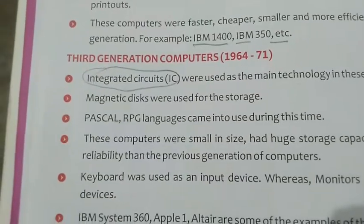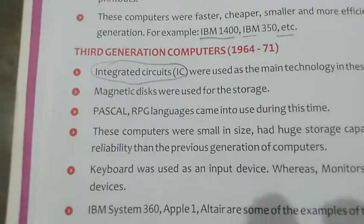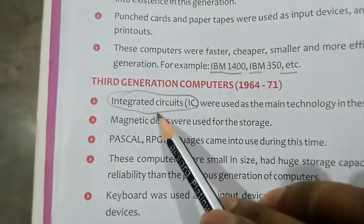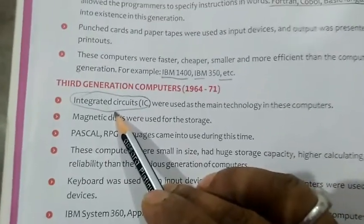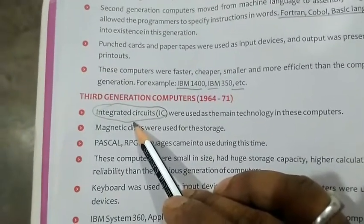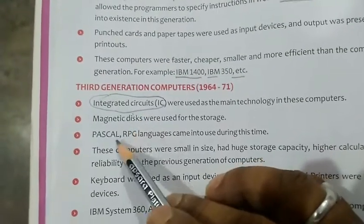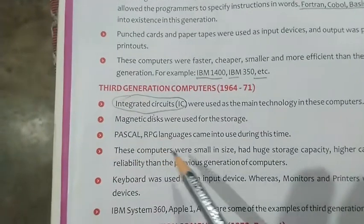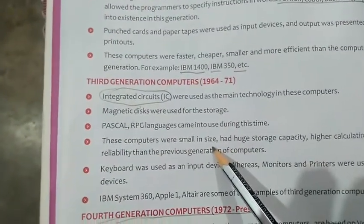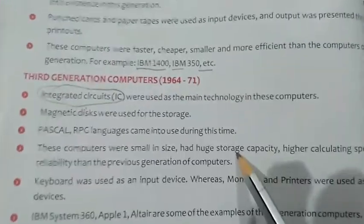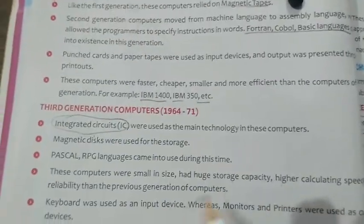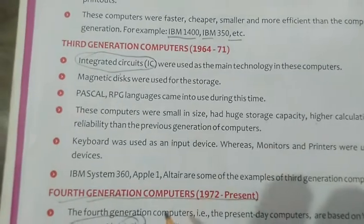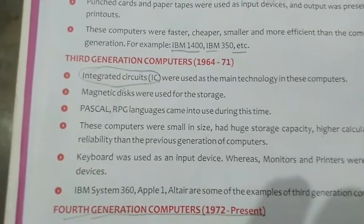Third generation computers span from 1964 to 1971. In this generation, note the use of integrated circuits — where many electronic devices are combined together. Other features include use of magnetic disks, development of languages like Pascal and RPG, reduced size of computers, more storage capacity, more calculation speed, more reliability, and use of keyboards, monitors, and printers.